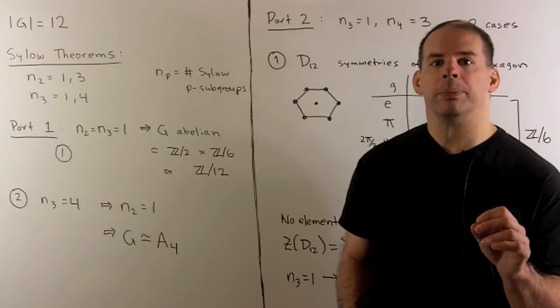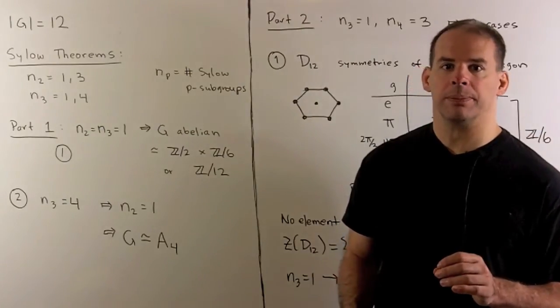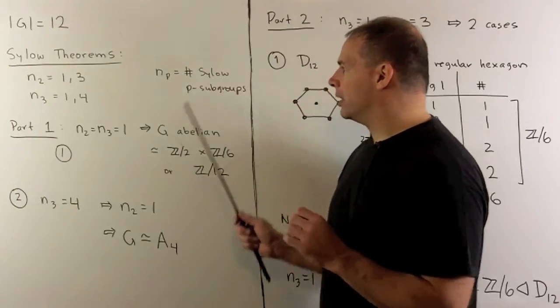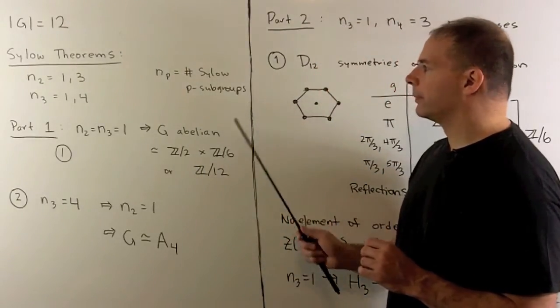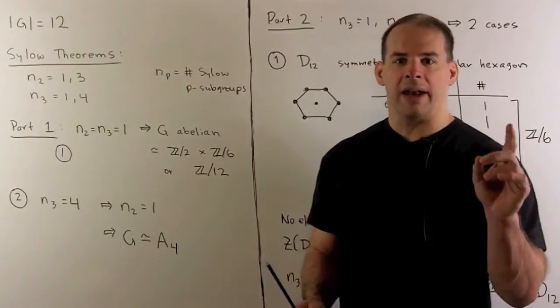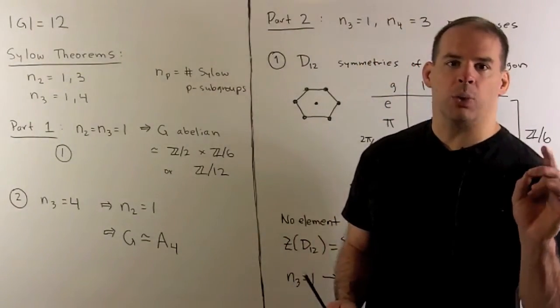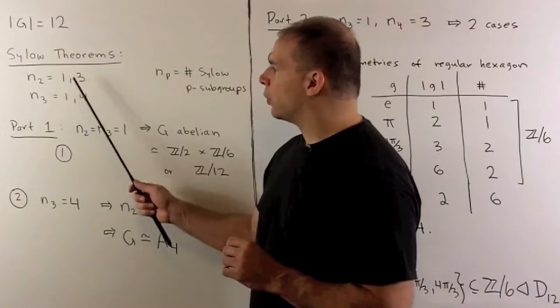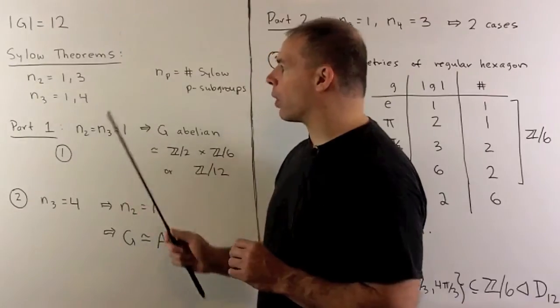Our key tool is the Sylow theorems. Now, if we let n sub p equal the number of Sylow p subgroups, where p is a parameter that divides the order of our group, then when the order of the group is 12, we're able to narrow down n sub 2 to 1 or 3, and n sub 3 to 1 or 4.